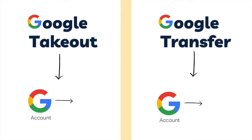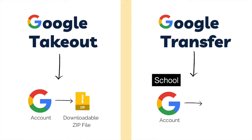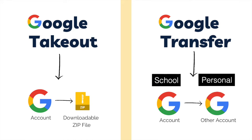The main difference between Google Takeout and Google Transfer is the end product. They both start from a Google account and we're trying to get the data out of that account. If you decide to use Google Takeout, it's going to download all the data from your Google account that you selected during the setup process, and put it into one downloadable zip file. Whereas Google Transfer is going to take your original Google account and transfer it over to another second account.